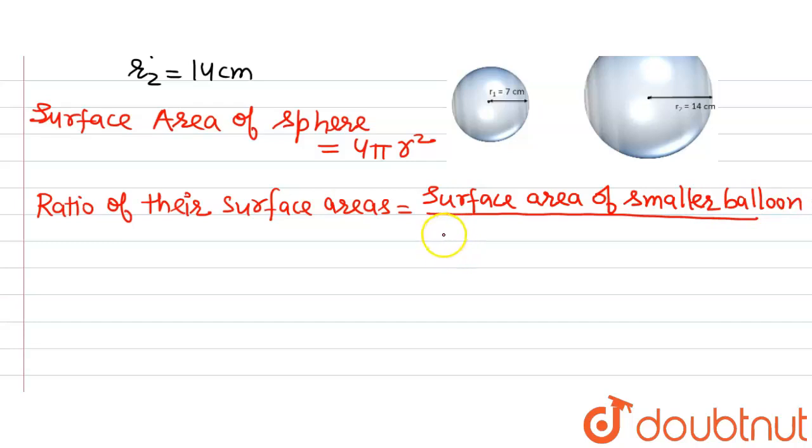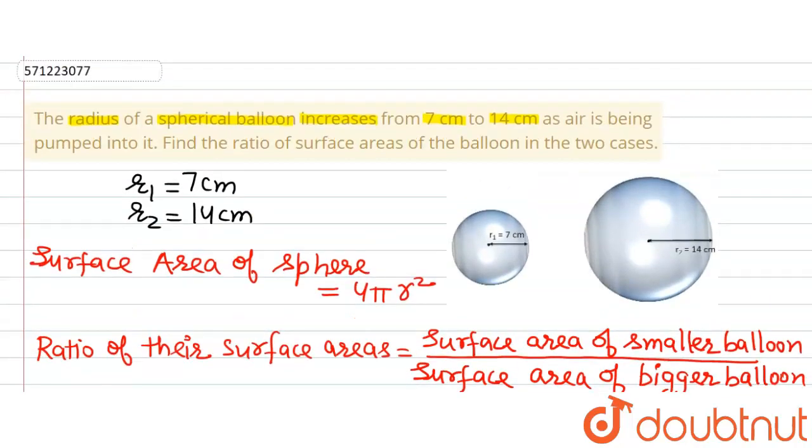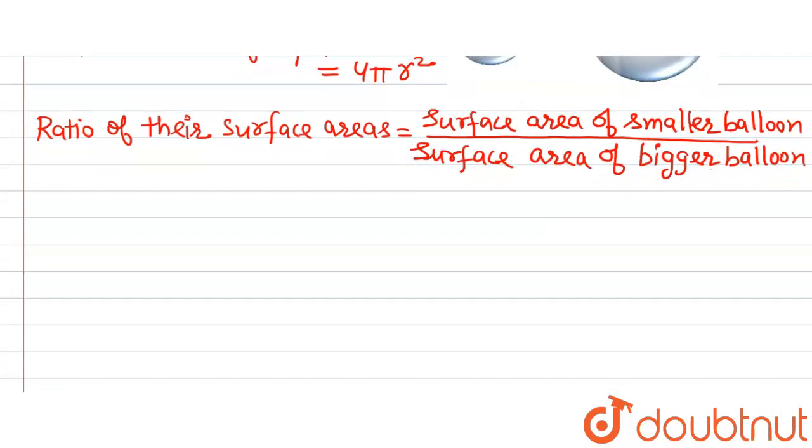Let's put in the values and find out the ratio. This will be equal to 4π R1² divided by 4π R2². Now 4π will divide 4π, so we are left with R1² divided by R2².